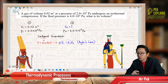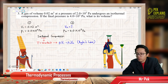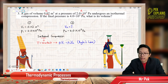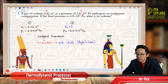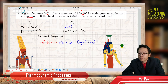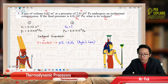So first of all we have the initial volume, put as V1, and we also have the initial pressure P1. The process is isothermal compression. Then we have the final pressure, put as P2, and we are asked for the final volume V2.